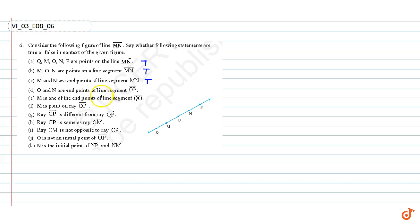O, N, R are endpoints of the line segment OP. That is false.